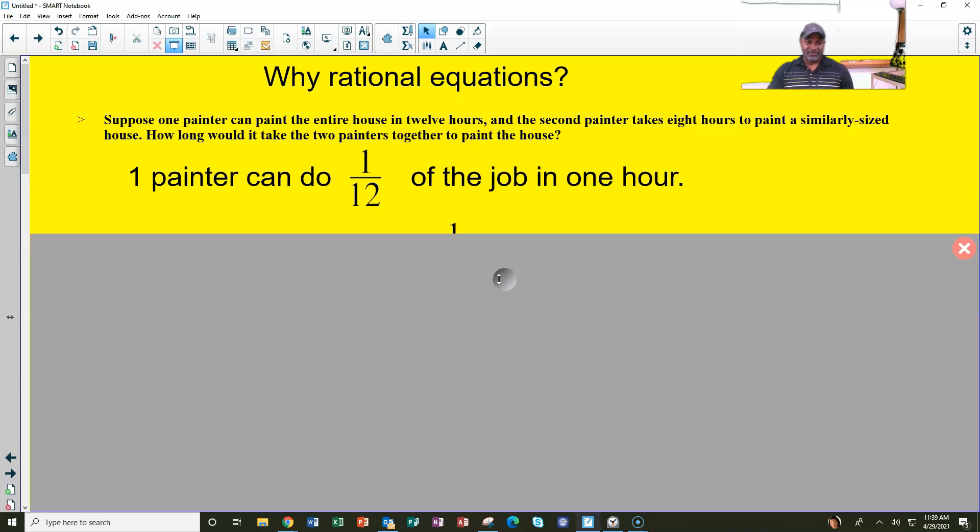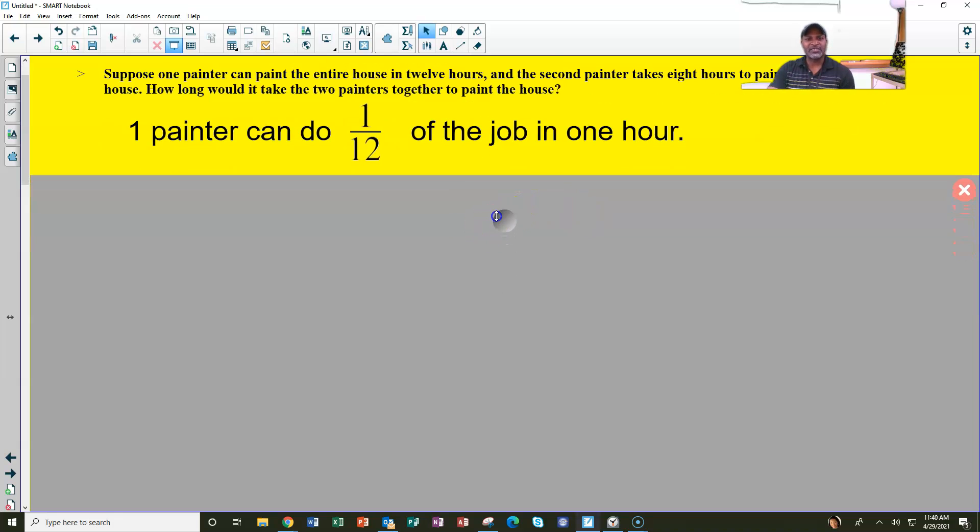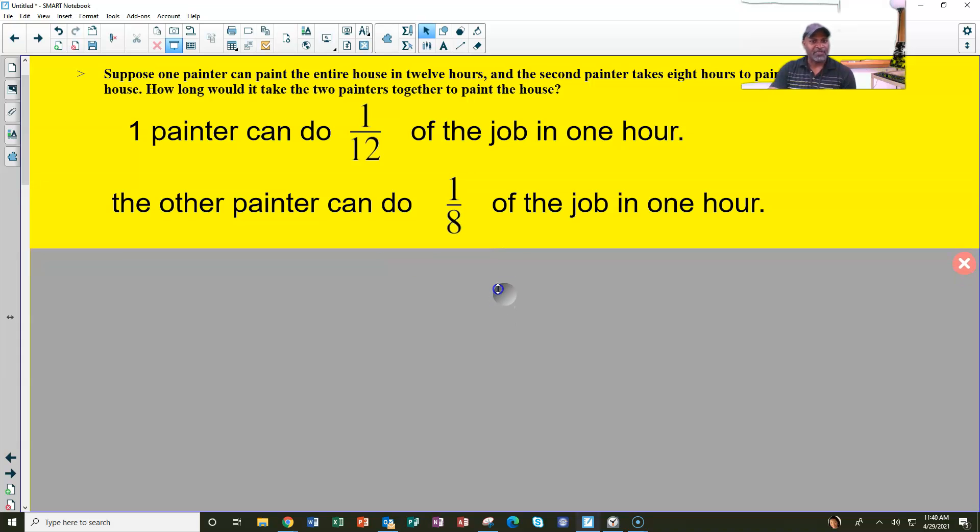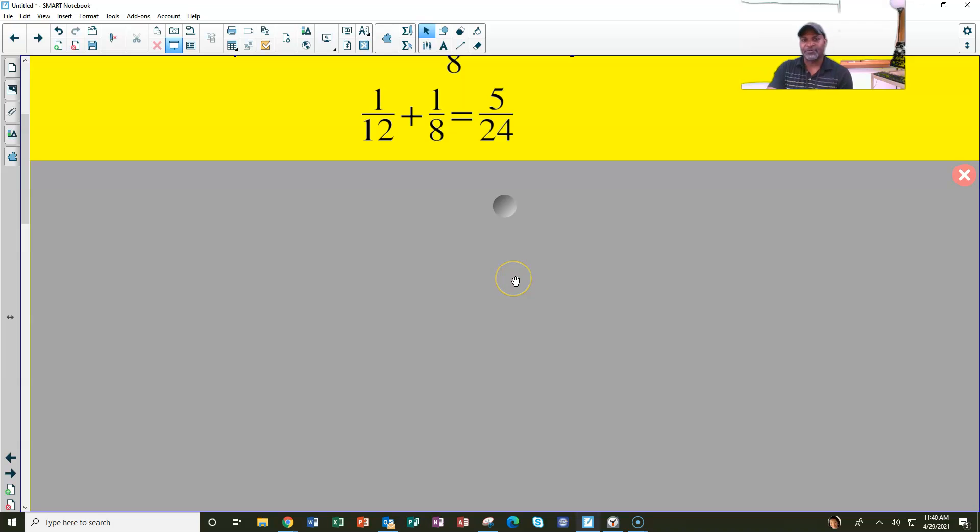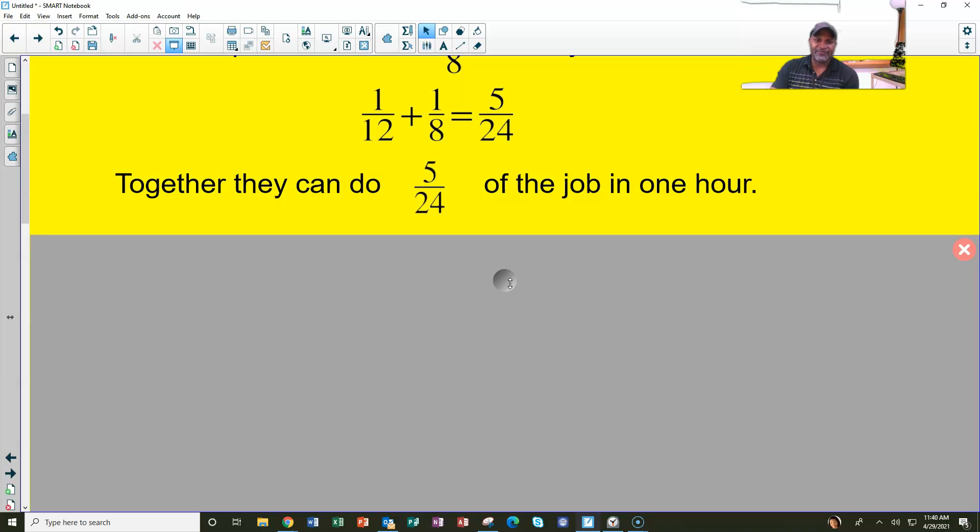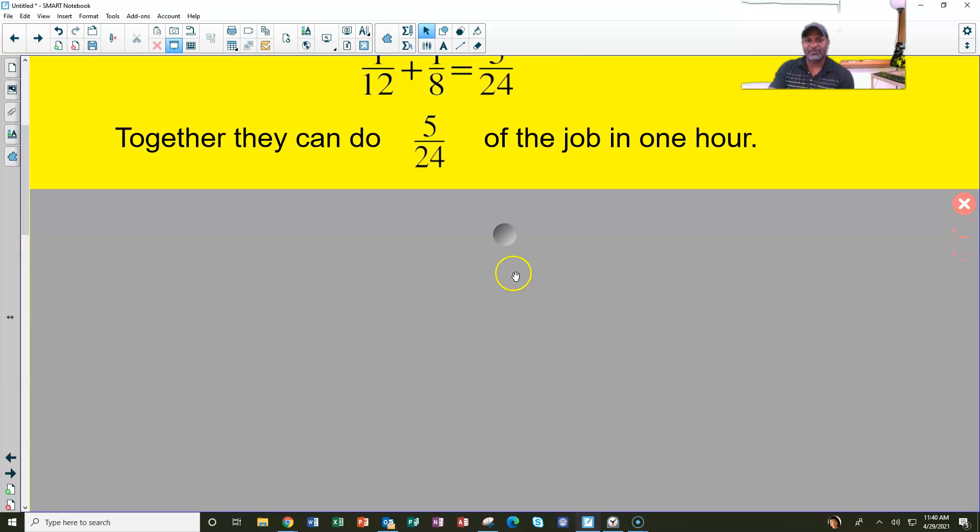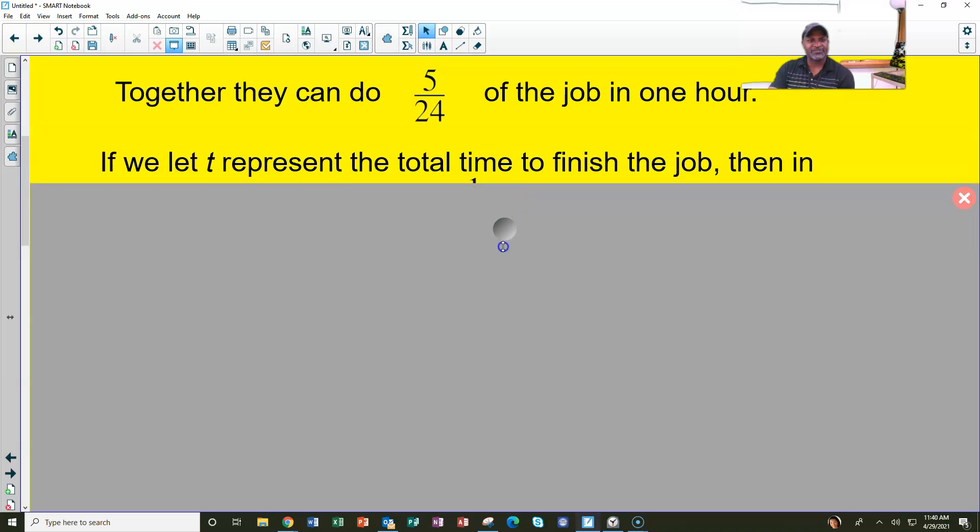One painter, first painter can do one twelfth of the job by himself in one hour. Second painter, how much of the job could he do in one hour? He can do one eighth of the job. So the question is how much of the job can they do together in one hour? You add those two, you get five over 24. So together they can do five twenty-fourths of the job in one hour. So we're dealing with fractions, adding fractions here.